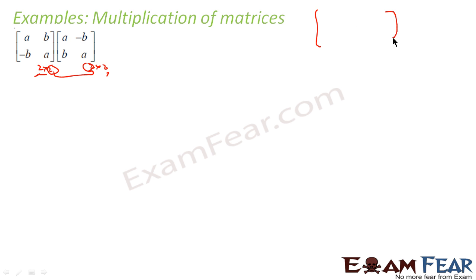That means the final output will be something like this: 2 cross 2, c11, c12, c21, c22, the general form of a matrix. Now let's do that. Let's multiply these two. This is a, b, this is minus b, a, this is a, minus b, and this is b, a.